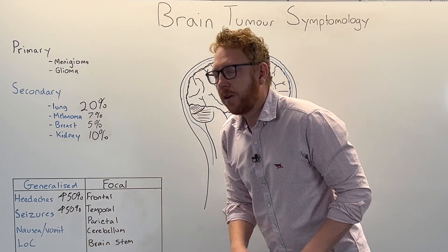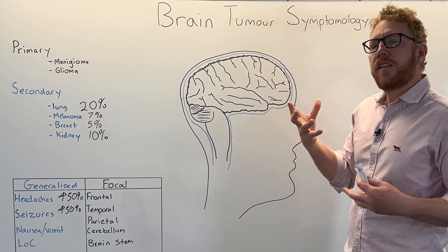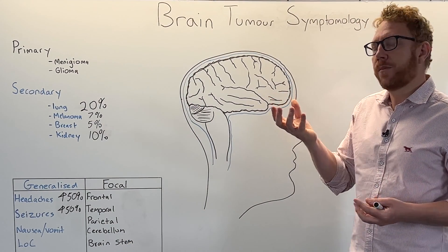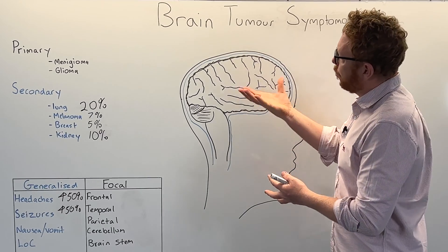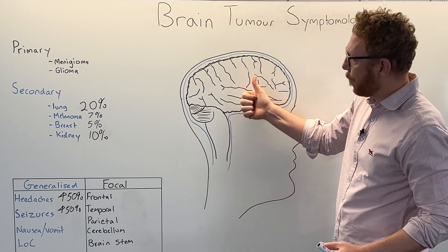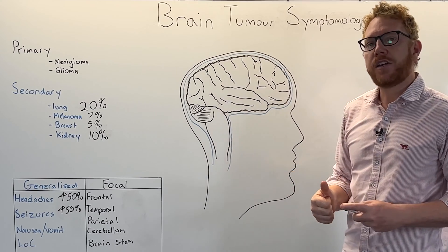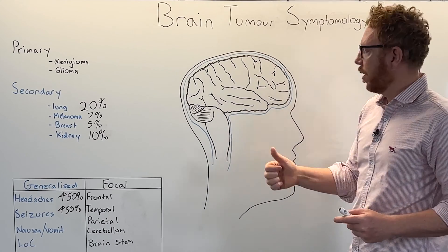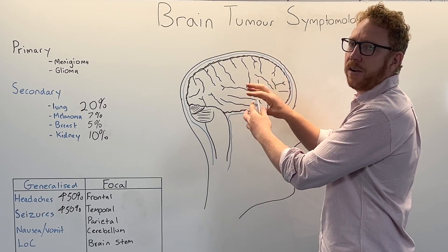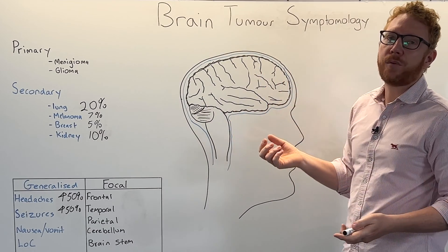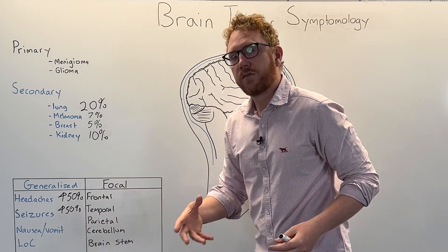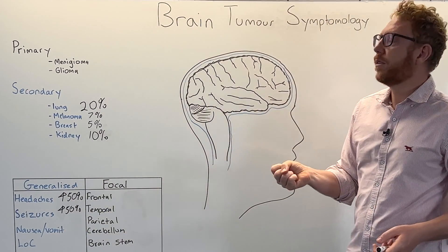Finally among generalised symptoms, we have loss of consciousness, which is also associated with increased intracranial pressure. As the pressure within the skull builds up, it becomes harder for blood to enter the brain through the arterial blood vessels. If blood, nutrients, and oxygen cannot reach the brain adequately, the brain can lose consciousness for short periods of time.